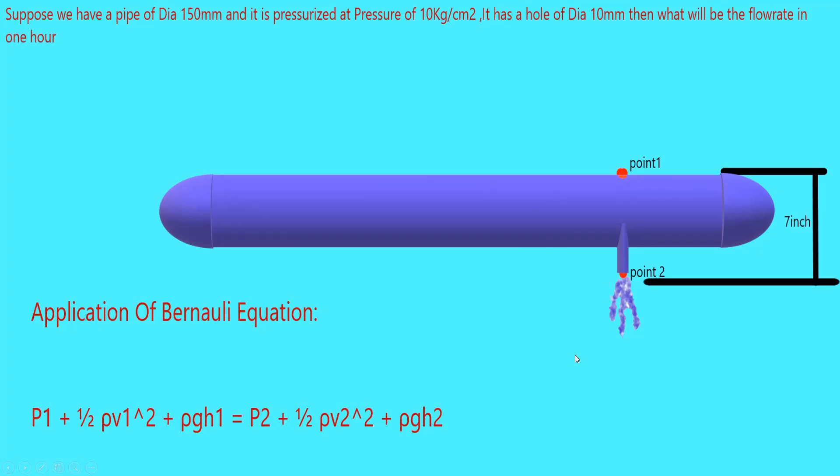One of my subscribers asked me a question: if I have a pipeline and there is a hole of 10mm diameter in the pipeline, then what will be the water flow rate from that hole? Today our practical example is based on this question. Suppose we have a pipeline of diameter 150mm and it is pressurized at a pressure of 10 kg/cm². It has a hole of diameter 10mm. Then what will be the flow rate in one hour?